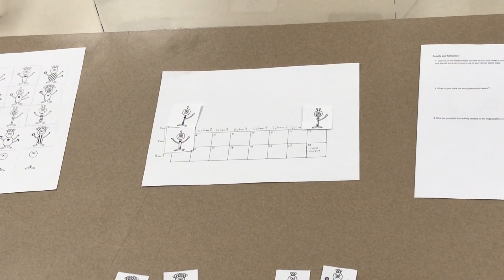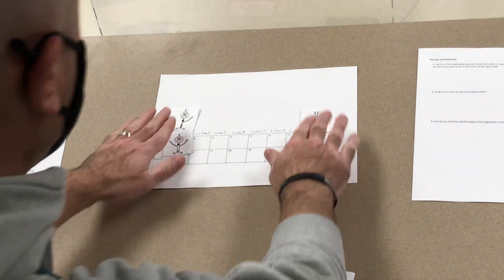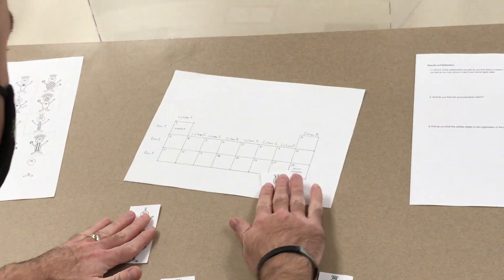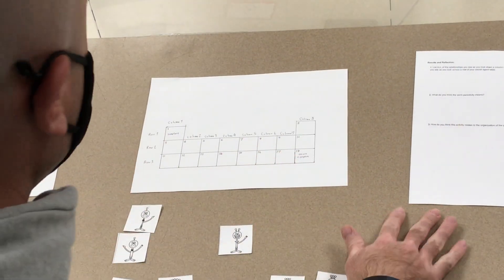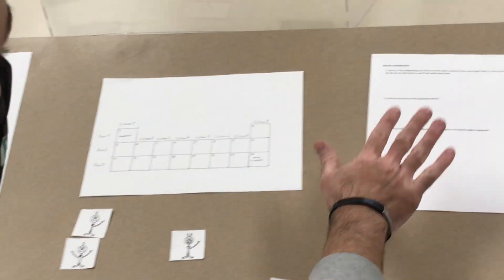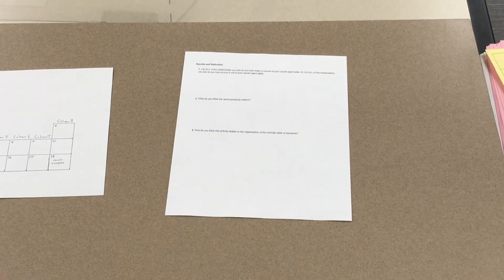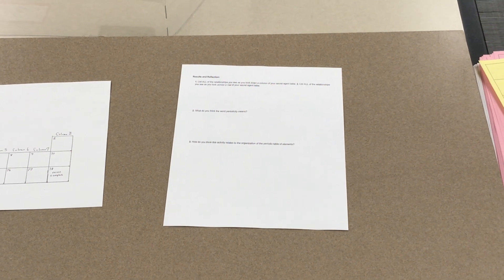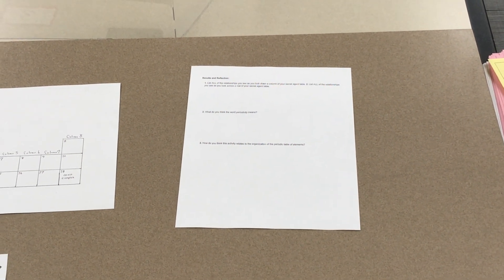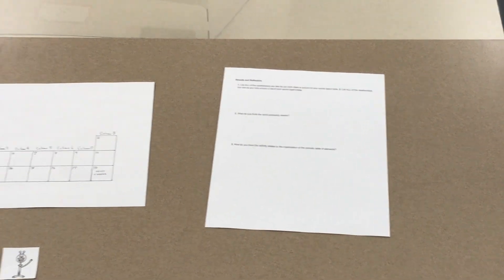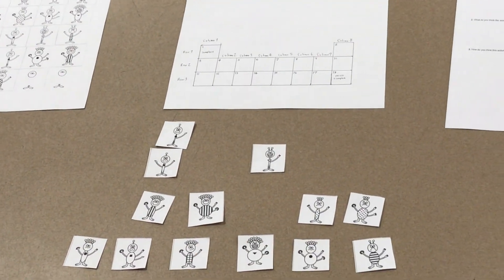So once you get everything arranged in this format like you see here, then you can go ahead and glue or tape it down and answer these couple follow-up questions just to make a direct comparison between this made-up stick figure periodic table and the real periodic table.